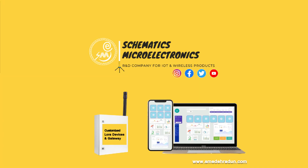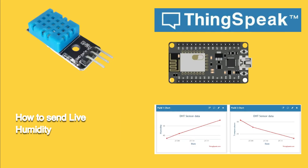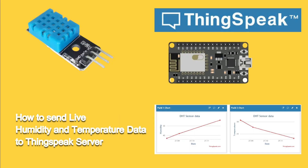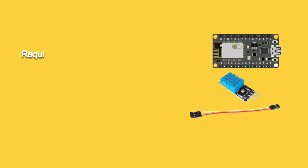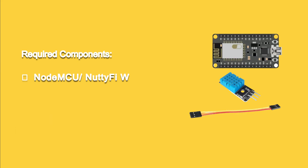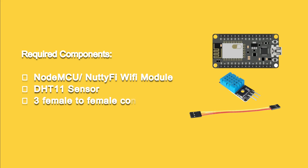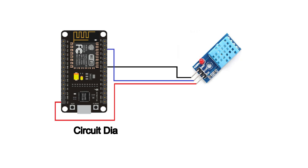Hi everyone, welcome to the ThinkSpeak series of videos. This is Bupendra Singh, and today I will tell you how you can send DHT11 sensor data to the ThingSpeak cloud server. We need the following components to make this project: NodeMCU or NotiFi WiFi module, DHT11 sensor, and three female-to-female connecting wires.